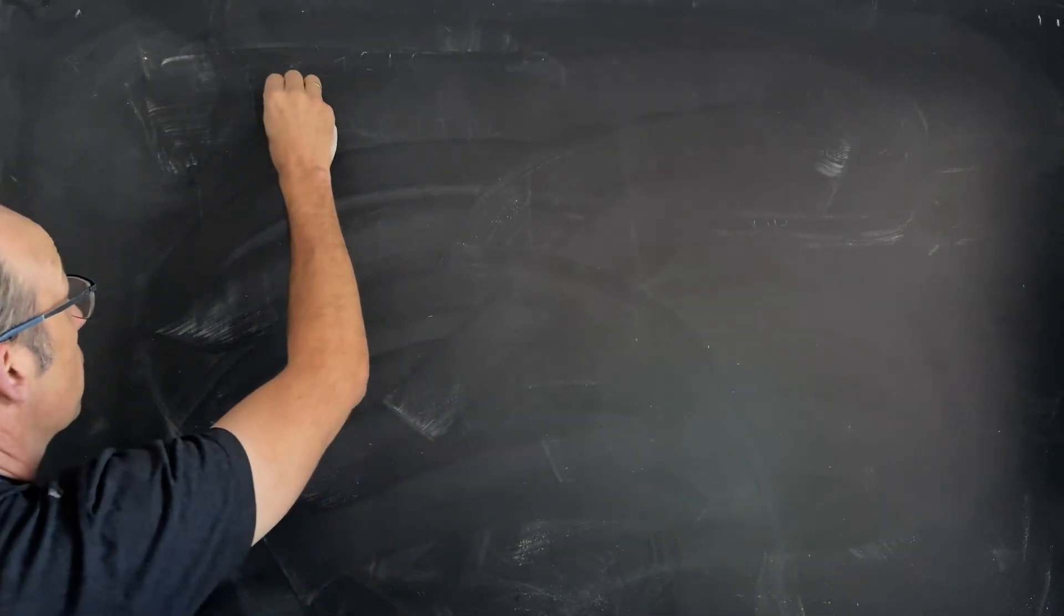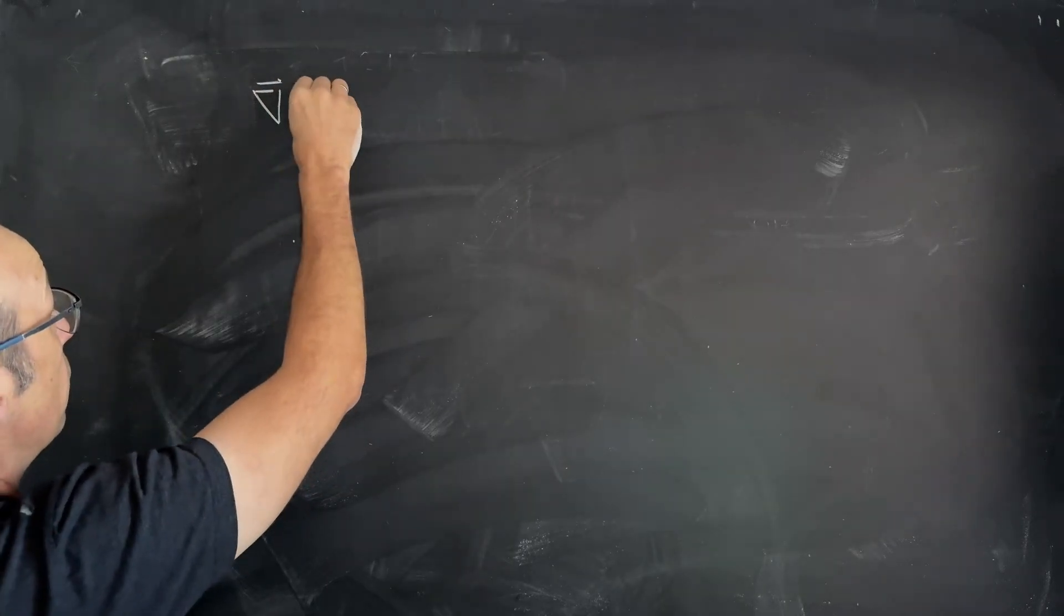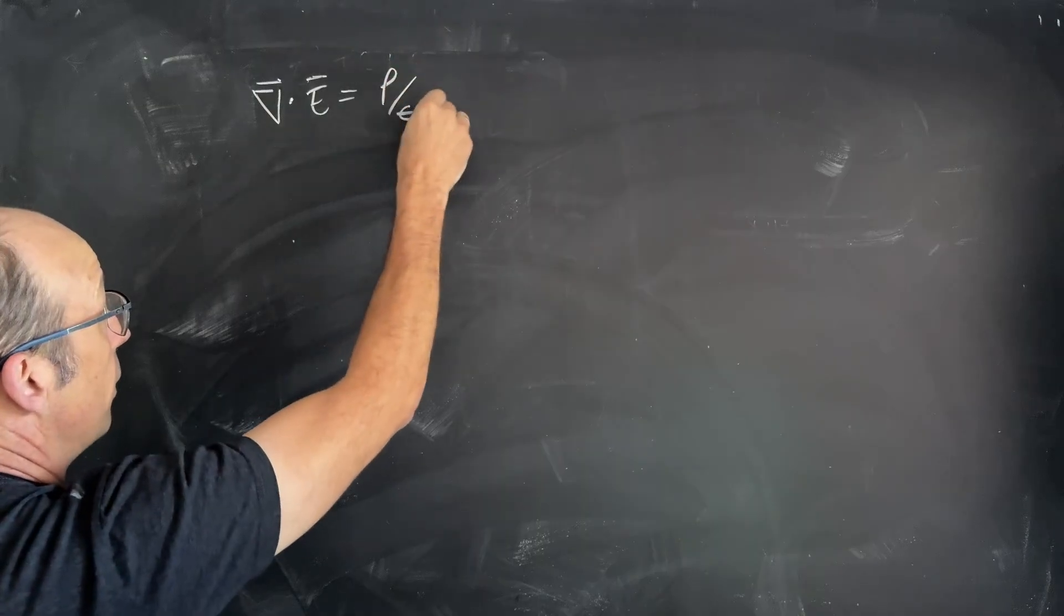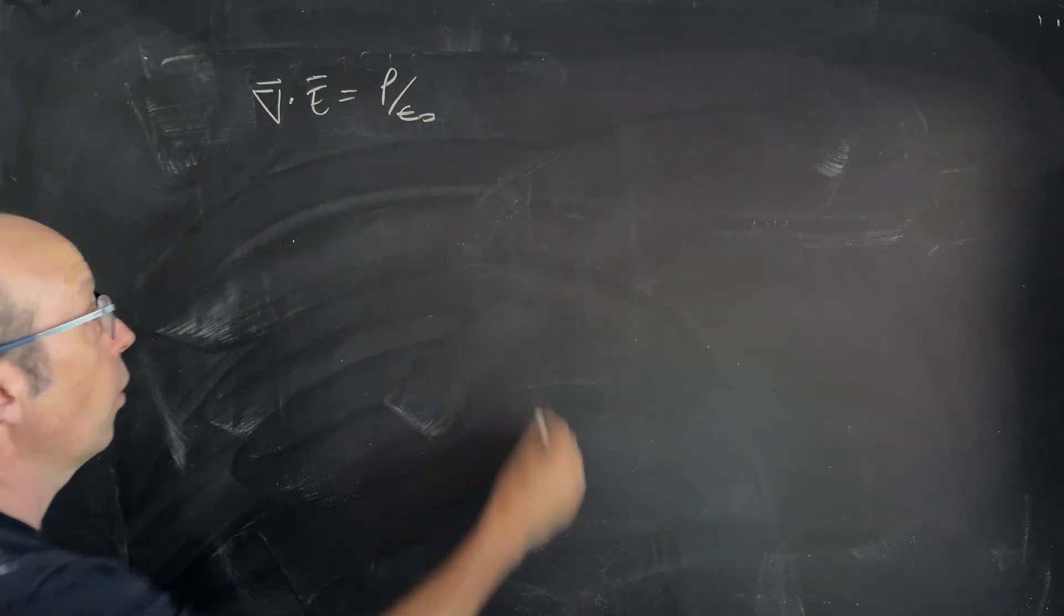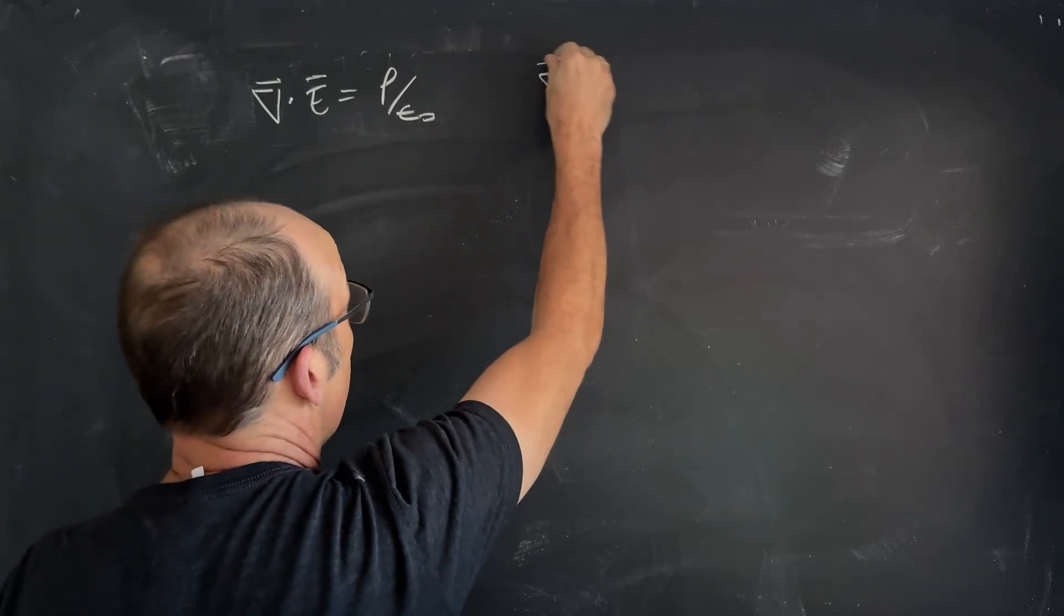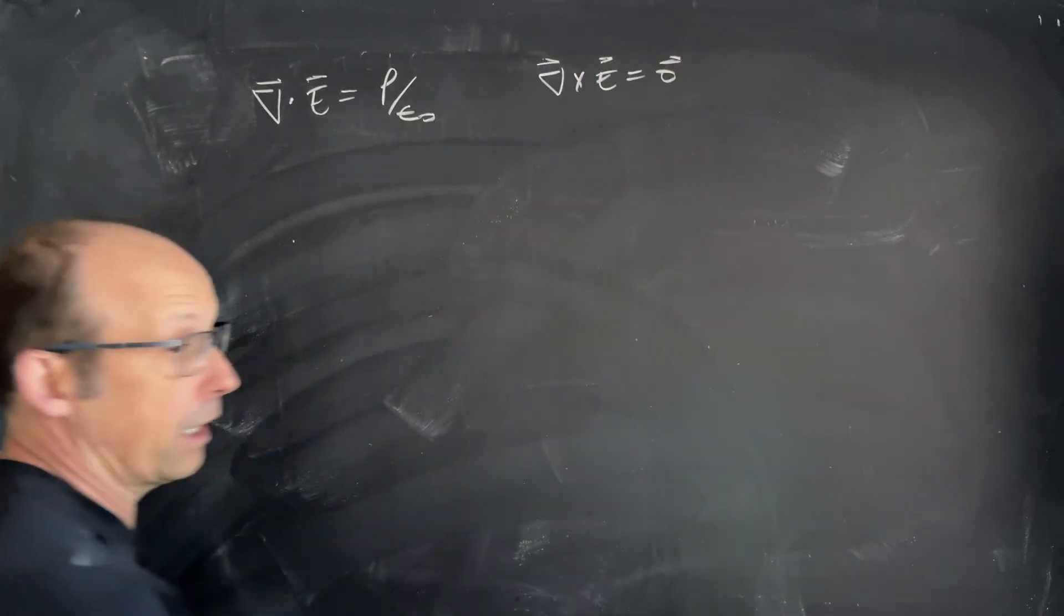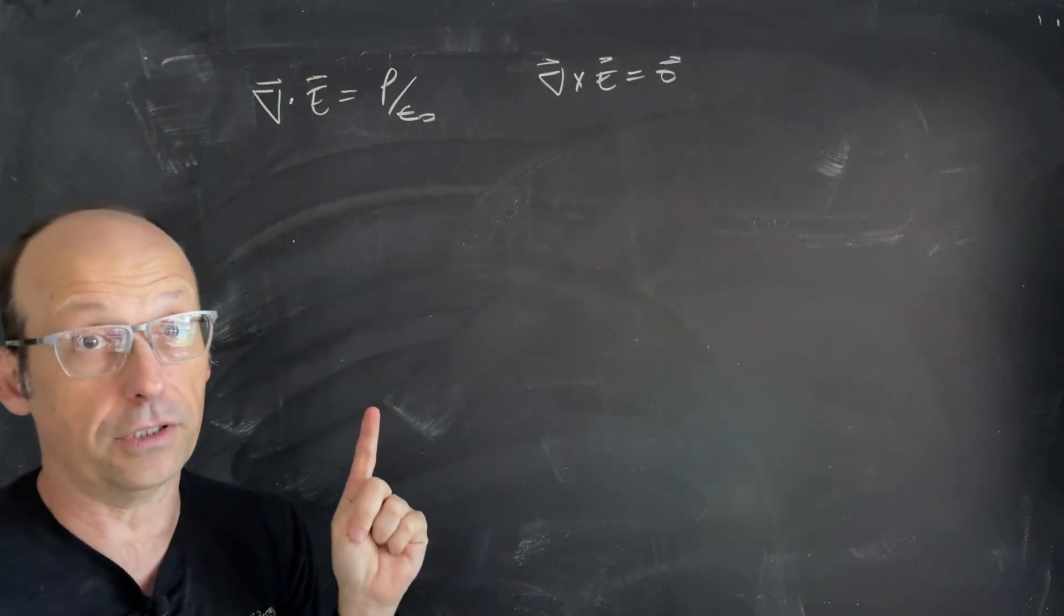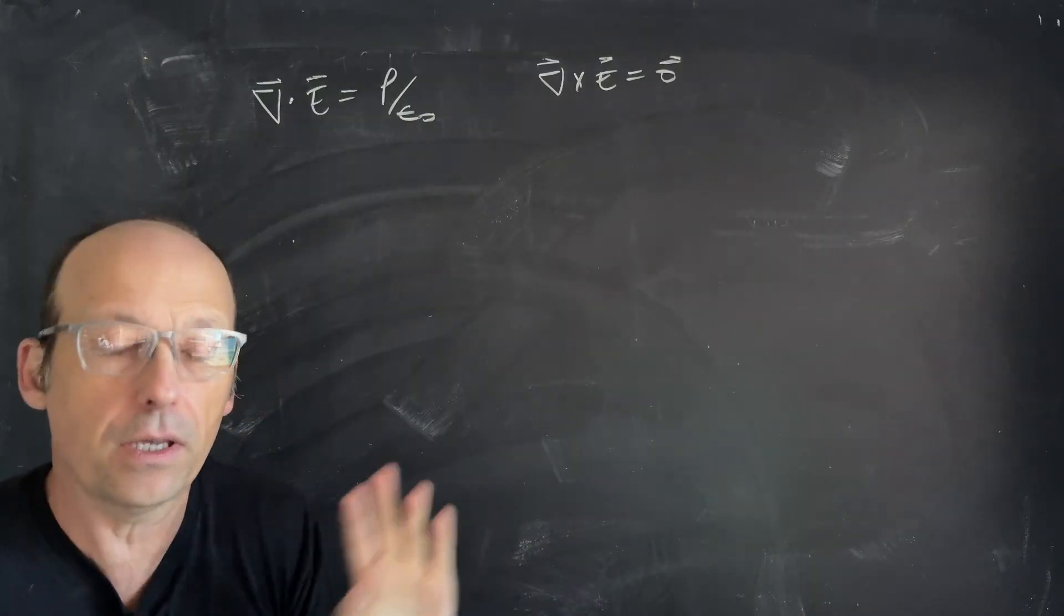We had Gauss's Law. So we've been writing Gauss's Law like this. Del dot E is rho over epsilon naught, the charge density. That's the differential version of Gauss's Law. We also had this. Del cross E was equal to zero. The curl of the electric field was zero. And that's only true in electrostatics. Once the things are moving, it's not always true.